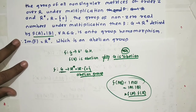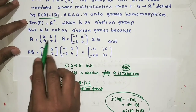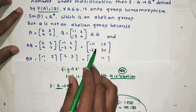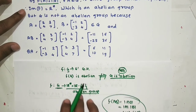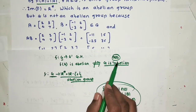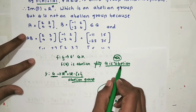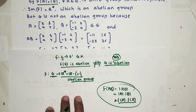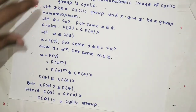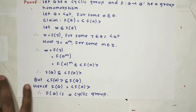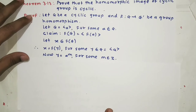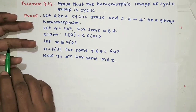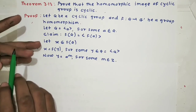So G is a non-abelian group, yet f(G) = ℝ* is abelian. This demonstrates that the converse of Theorem 3.11 is not true. Keep this statement in mind — it may appear in MCQ exams. Homomorphic image of an abelian group is abelian, but the converse does not hold. Next: prove that the homomorphic image of a cyclic group is cyclic.